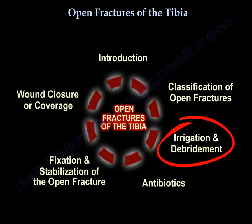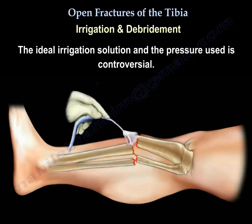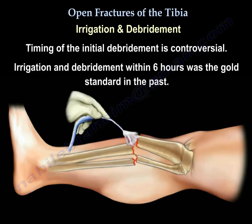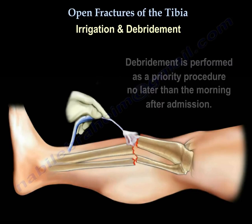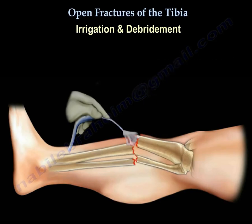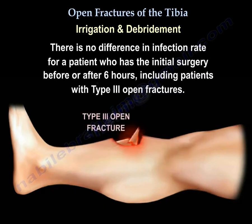Irrigation and debridement: The ideal irrigation solution and pressure used is controversial. Timing of the initial debridement is also controversial — debridement within six hours was the gold standard in the past. Currently, debridement is performed as a priority procedure no later than the morning after admission. There is no difference in infection rate for patients who have initial surgery before or after six hours, including those with Type 3 open fractures.